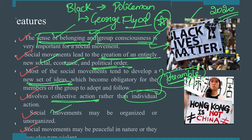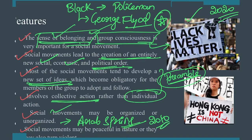Sometimes social movements can be unorganized. One example is the spontaneous Arab Spring. There was no formal organization, no leader — it happened in 2010 in Arab countries, in demand for democracy, after a fruit seller was burned to death. This is a primary example of an unorganized movement that blew out of proportion.